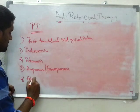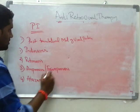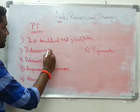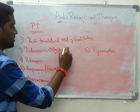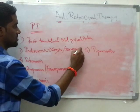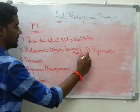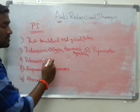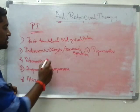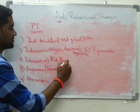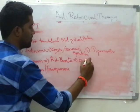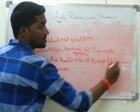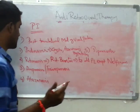Indinavir can cause renal stones, crystalluria, and asymptomatic unconjugated hyperbilirubinemia. Ritonavir acts as a pharmacokinetic booster — as protease inhibitors are metabolized rapidly, Ritonavir helps sustain their levels. It is recommended as a booster for all protease inhibitors except Nelfinavir — no booster is required for Nelfinavir. Amprenavir and Fosamprenavir: when given with ethinyl estradiol, their efficacy decreases. Also, Amprenavir can cause Stevens-Johnson syndrome.